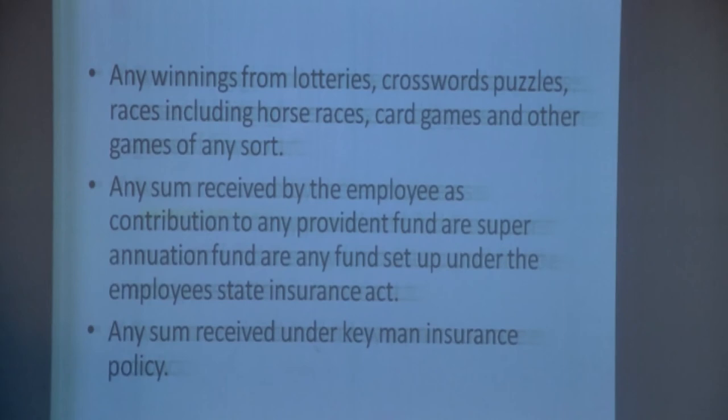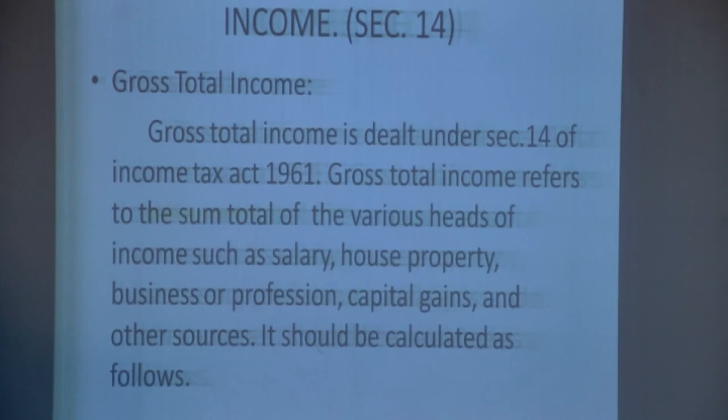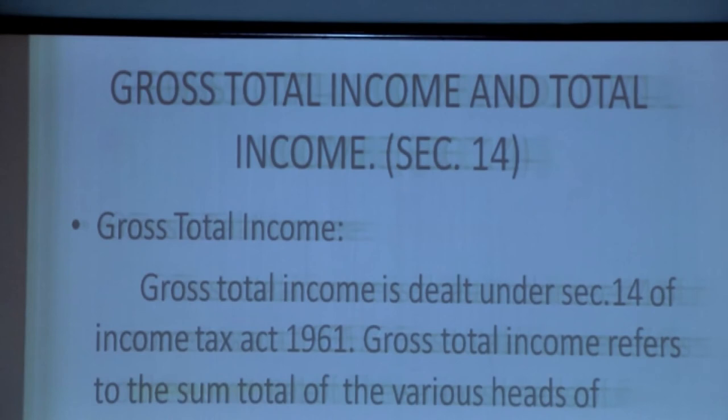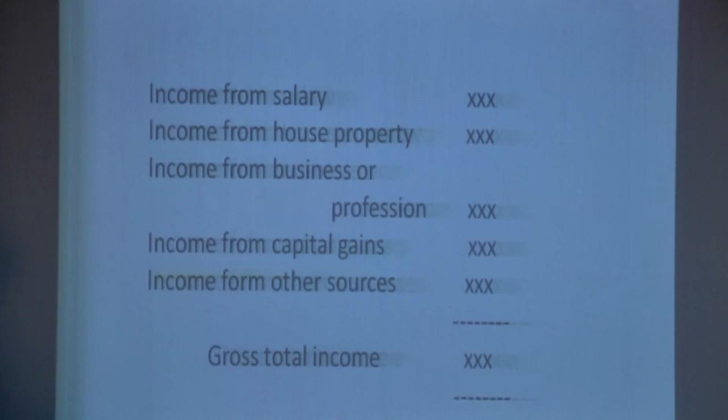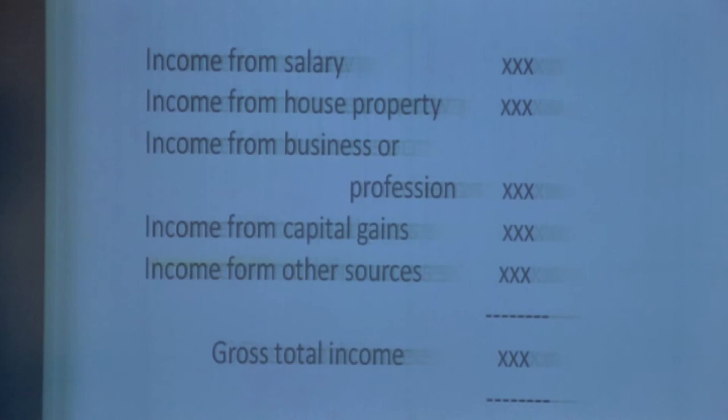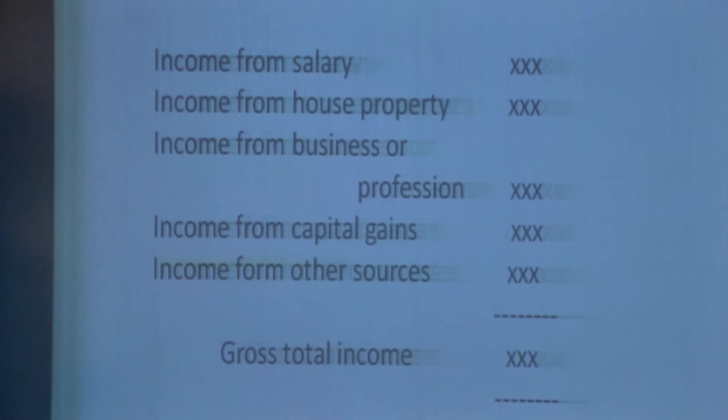Gross total income is dealt under Section 14 of the Income Tax Act 1961. It includes: income from salary, income from house property, income from business or profession, income from capital gain, and income from other sources. These are called total income. Thank you. If you have any doubts, please ask me — I am ready to clarify your doubts.